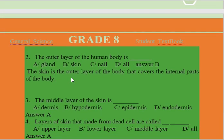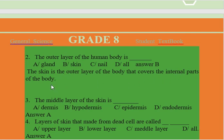The outer layer of the human body is: A. Gland, B. Skin, C. Nails, D. All outer layers of the human body. The answer is B. The skin is the outer layer of the body that covers the internal part of the body.